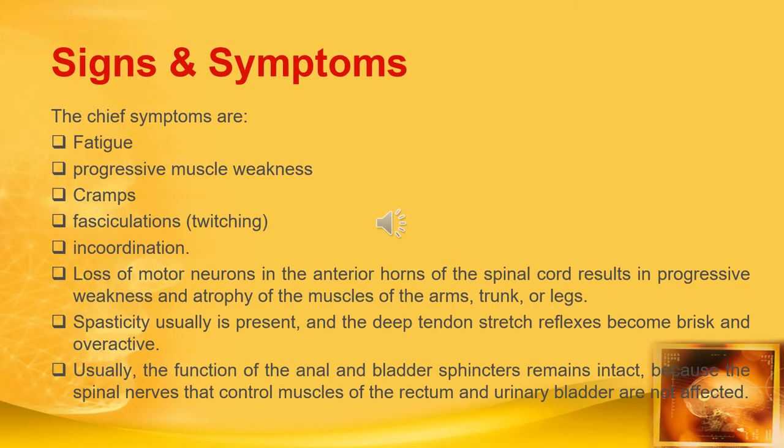Now these are the signs and symptoms of ALS. First, fatigue, progressive muscle weakness, cramps, twitching, and incoordination. Loss of motor neurons in the anterior horns of the spinal cord results in progressive weakness and atrophy of the muscles of the arm, trunk, and legs.